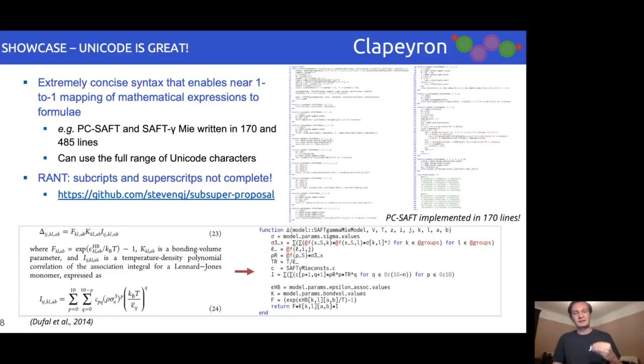One aspect we would like to bring up that sets Julia apart and drew us to implementing Clapeyron in it is the overwhelming support for Unicode characters. Most implementations of equations of state in other languages are often abstruse and difficult to read. In Clapeyron, we tried our best to have a one-to-one mapping of the formula from the paper to the code for clarity and conciseness.